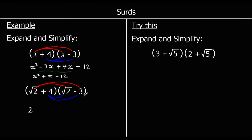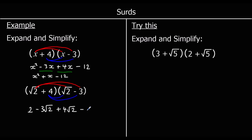Then we've got root 2 times negative 3. It's the same as x times negative 3 — with x times negative 3, we just write negative 3x, which means negative 3 times x. So root 2 times negative 3 is negative 3 root 2, which means negative 3 times root 2. Then 4 times root 2 — the same as 4 times x giving 4x — so 4 times root 2 is 4 root 2. And 4 times negative 3 is negative 12.